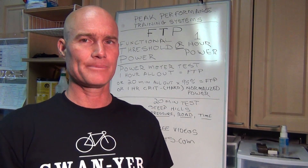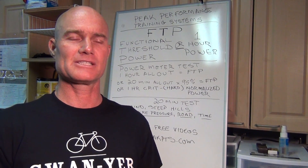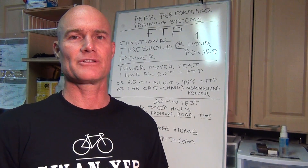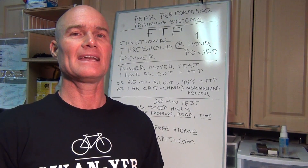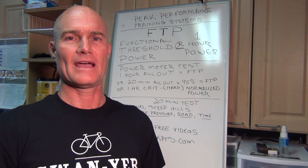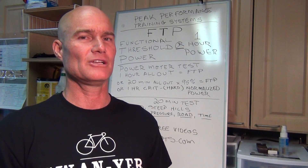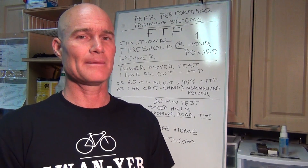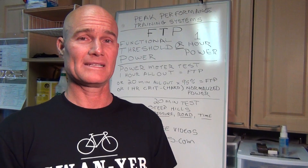The test that I like to do — and people have preferred since that initial one hour test came out — is a 20 minute test. It's not as hard physiologically to do and you can do it more often. We'll do a 20 minute test and then take 95% of the power that you're able to average for that 20 minutes, and that could be your functional threshold. You could do the one hour, you could do 20, you could do 30, or a couple other ways to determine your functional threshold. But I really like using the 20 minute test — it works great and it's repeatable.